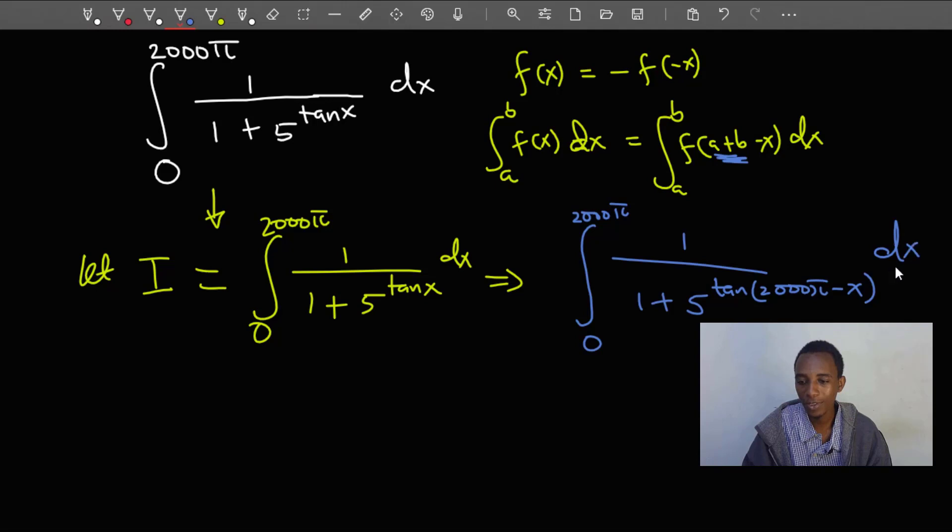So this means I equals the integral from 0 to 2000π of 1 divided by 1 plus 5. If you expand this right here, that should be negative tan x, negative tan x. This is with respect to x.